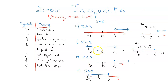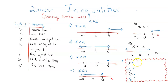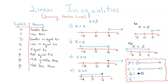So, these are the ways of representing inequalities on the number line. In summary: for greater than, the circle is unshaded and the arrow points right. For less than, the circle is unshaded and the arrow points left. For greater than or equal to, the circle is shaded and the arrow points right. And for less than or equal to, the circle is shaded and the arrow points left.